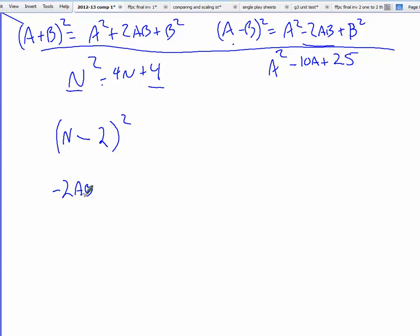What is our a term in our binomial? n. It's n. What's our b term? 2.